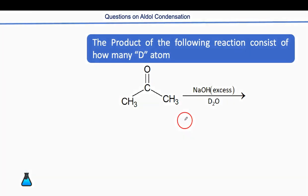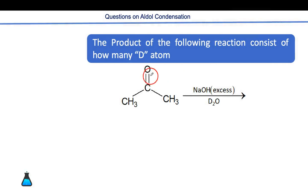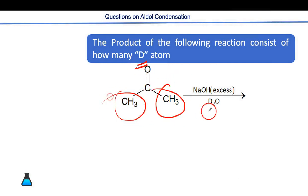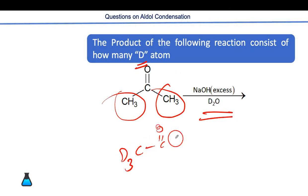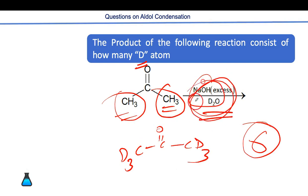The next question asks how many deuterium atoms the product contains. In this case, all alpha hydrogens are replaced by deuterium. The molecule (acetone, CH₃COCH₃) becomes CD₃COCD₃. So the correct answer is 6 — all six alpha hydrogens are replaced by deuterium.